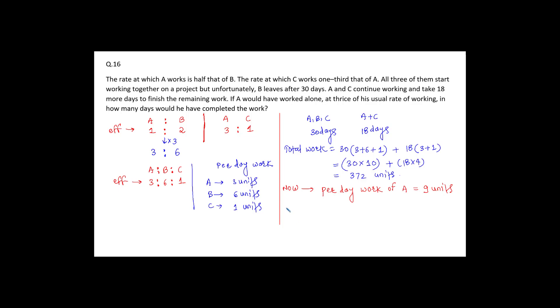So now number of days A requires to complete the work alone. Number of days A requires to complete the work alone is equal to 372 divided by 9. So let's simplify this. Let's divide it by 3. That is equal to 41 and 1 by 3 days.